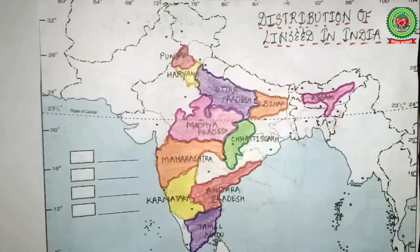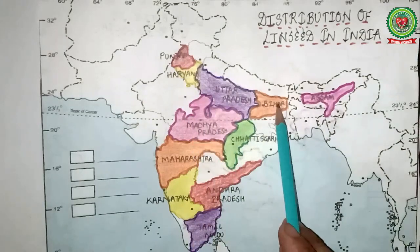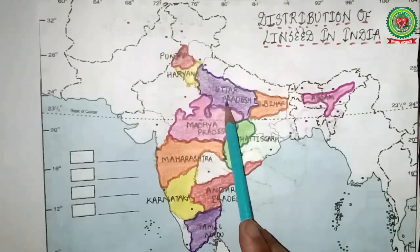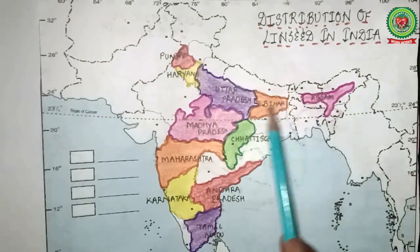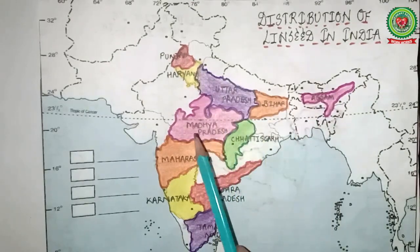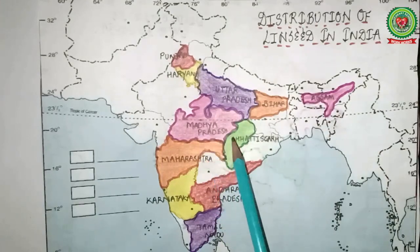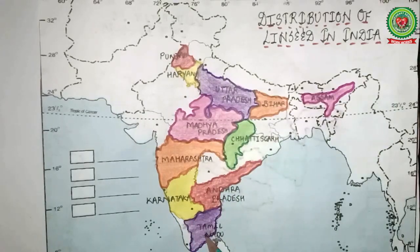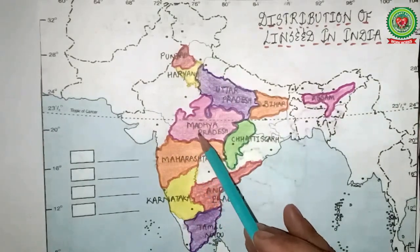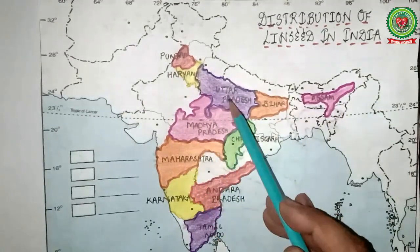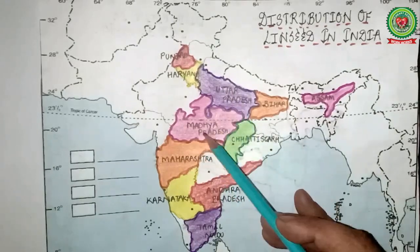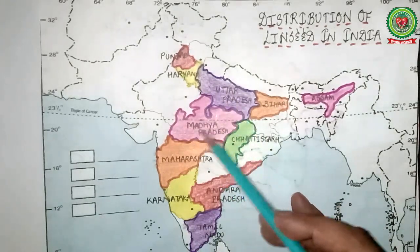Linseed is mainly grown in India in the Indo-Gangetic Plains, covering the states of Punjab, Haryana, Uttar Pradesh, Bihar, and Assam. It is also grown in Central India covering Madhya Pradesh and Chhattisgarh. Other states include Maharashtra, Karnataka, Andhra Pradesh, and Tamil Nadu. Madhya Pradesh, Uttar Pradesh, and Maharashtra together account for about 75% of total linseed produced in India.